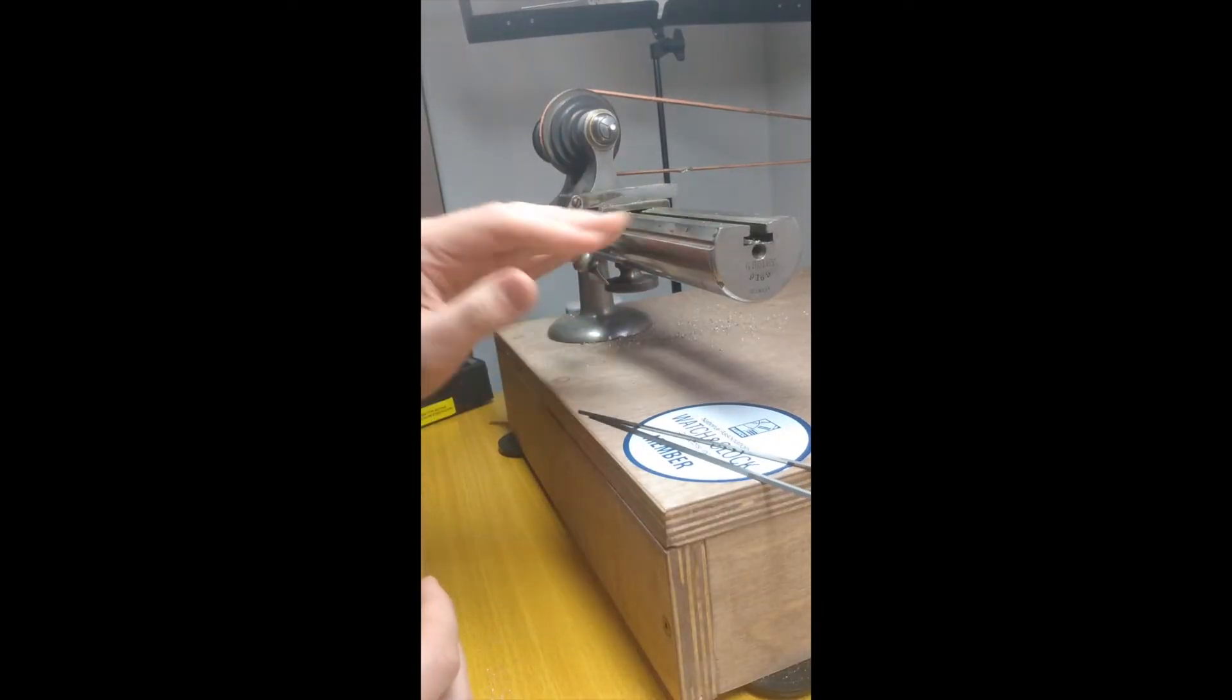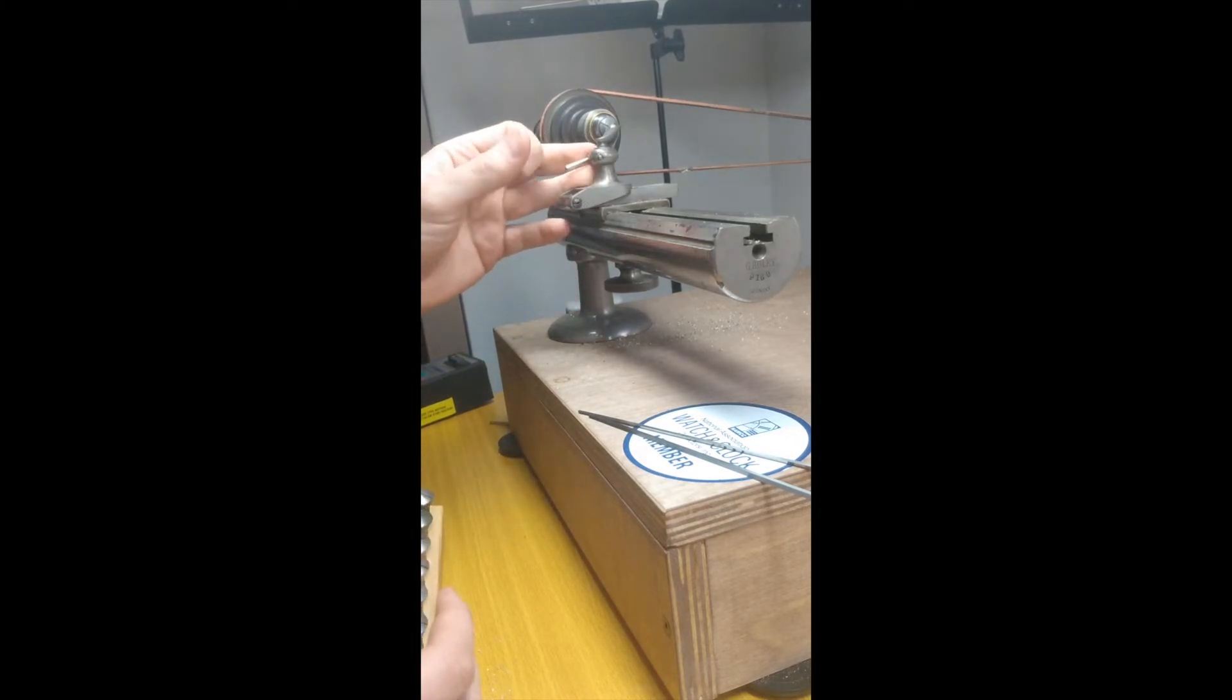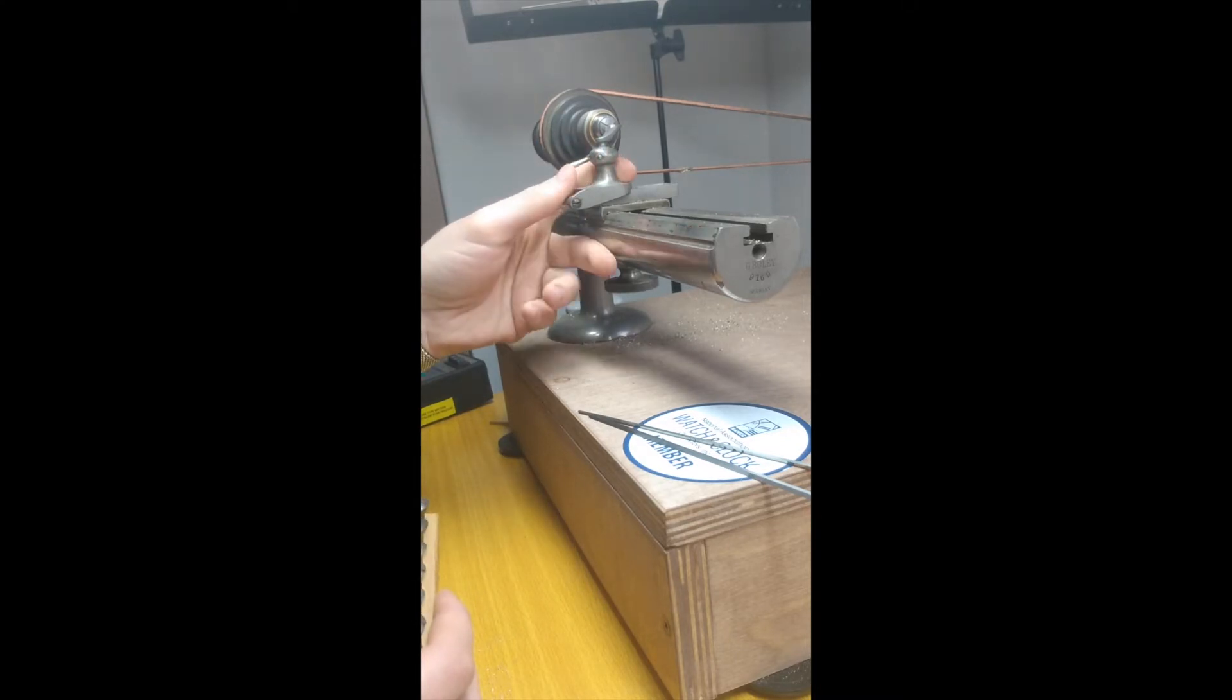So here's my watchmaker's lathe, a humble Bolli 8 millimeter WW type. I bought this a few months ago. I've been learning how to use it. We can use this to make new parts for the watch including in this case a regulator pin.